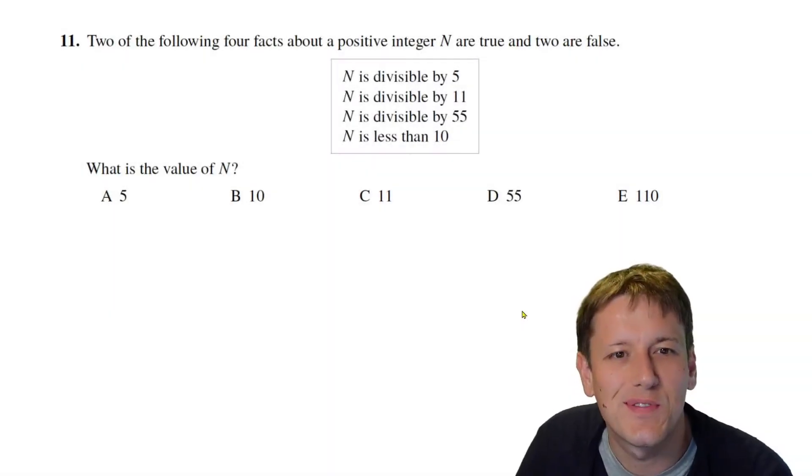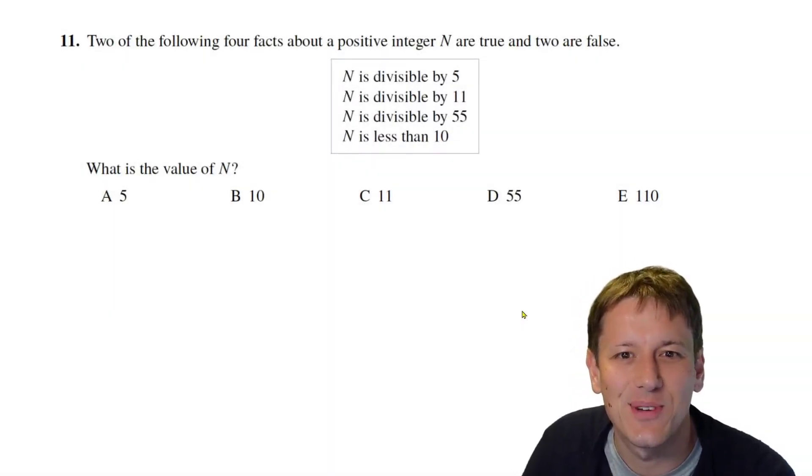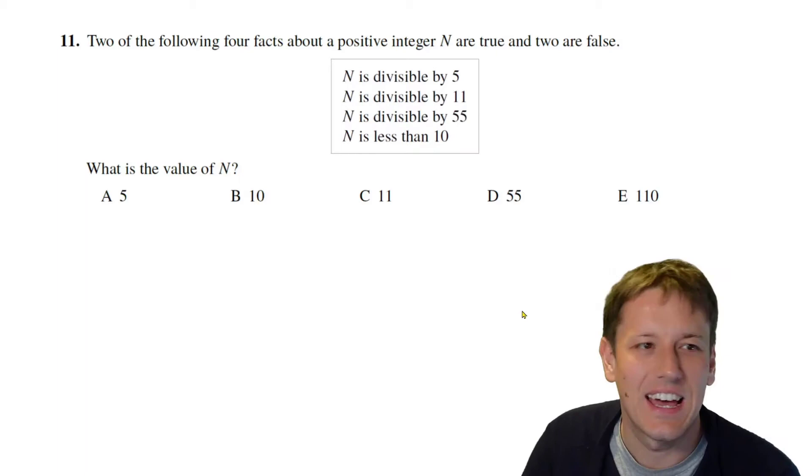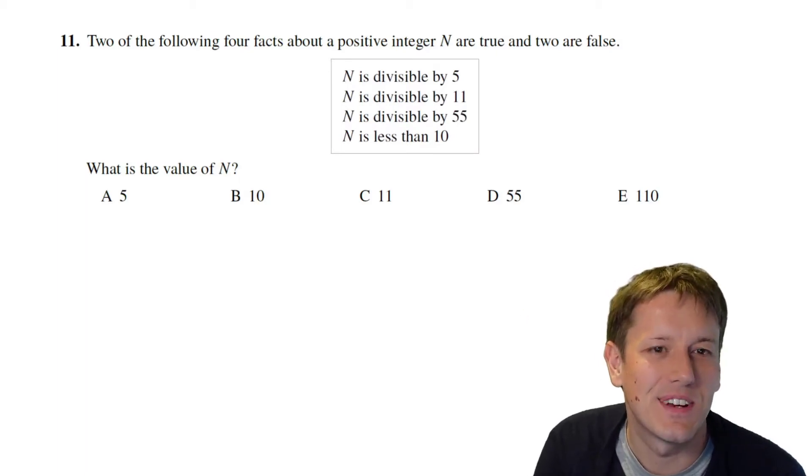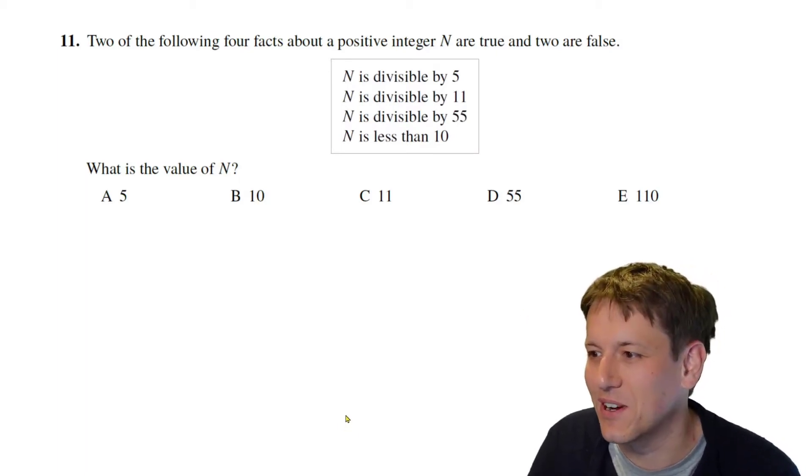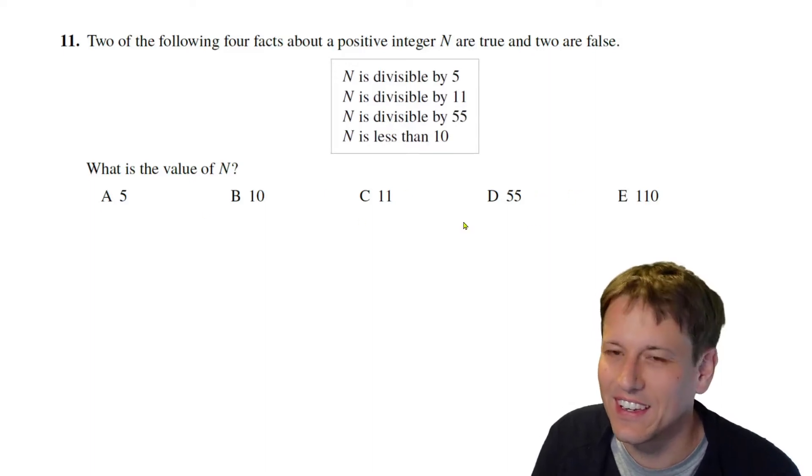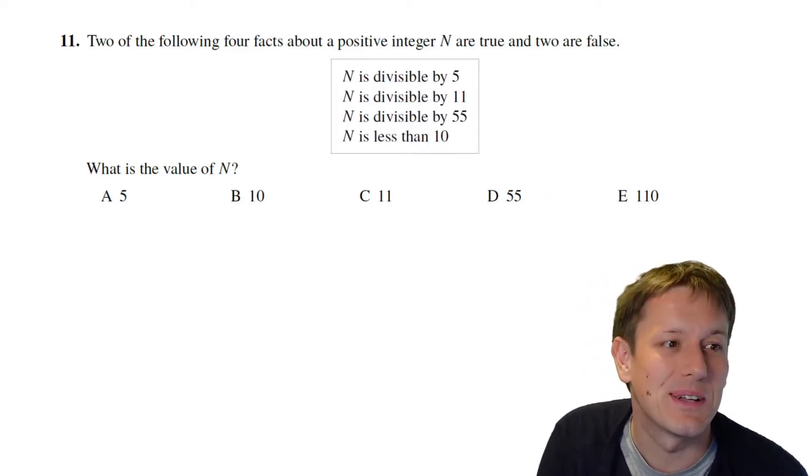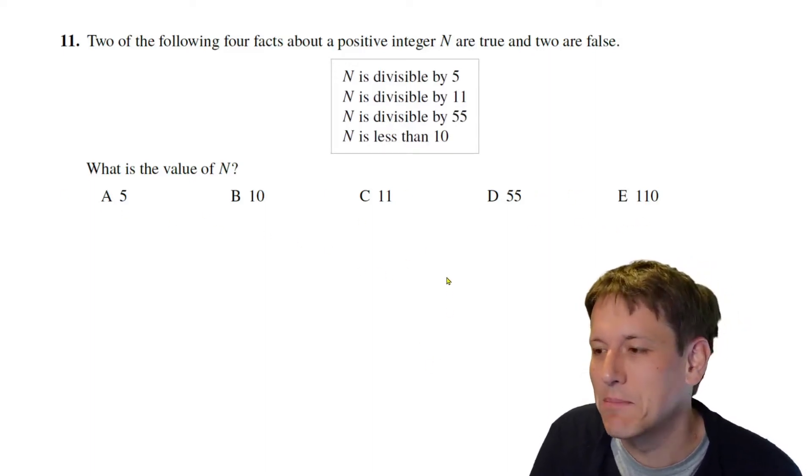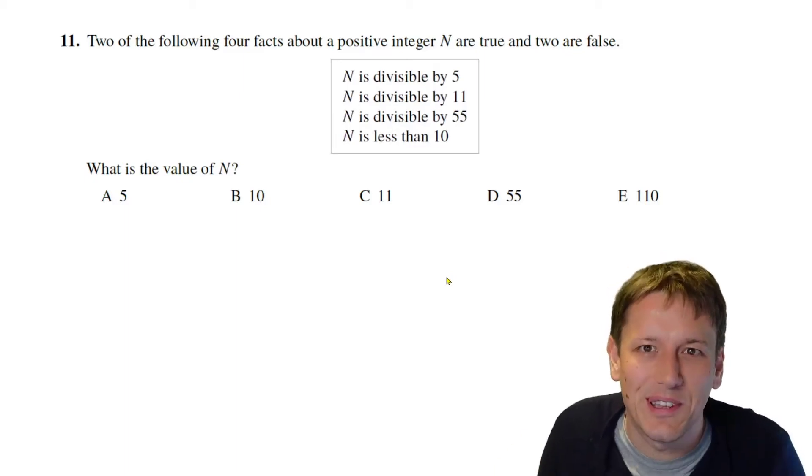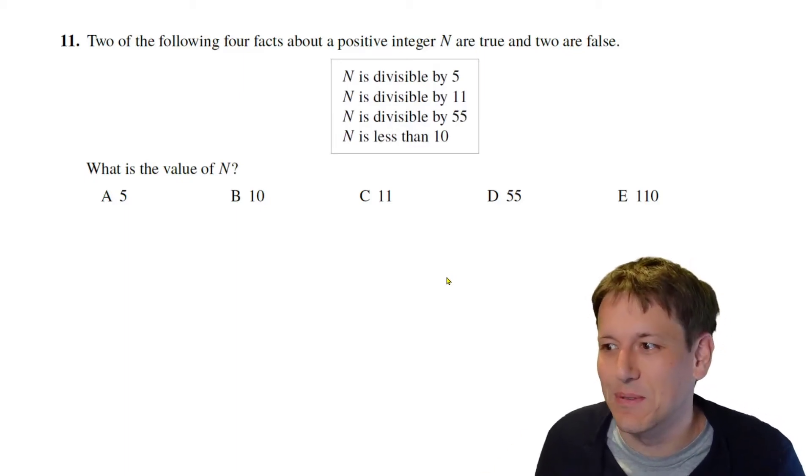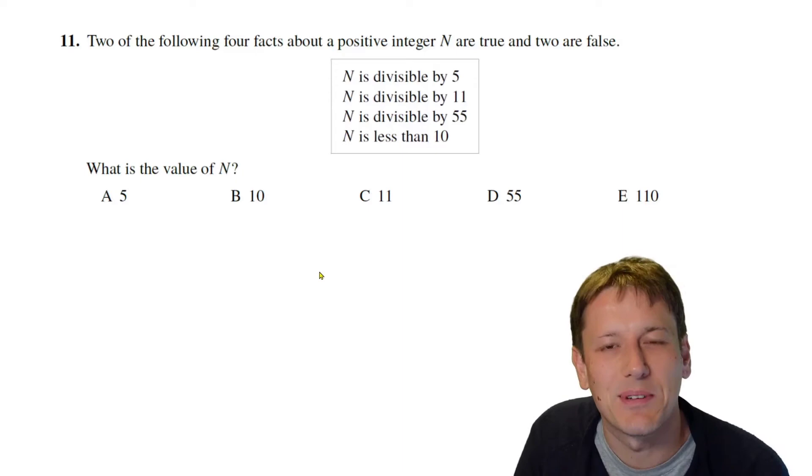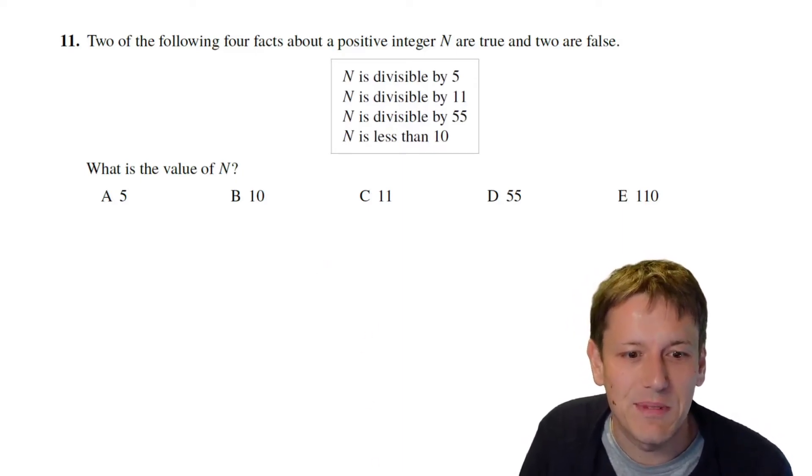Question 11 says two of the following four facts about a positive integer N are true and two are false. And it's quite funny how easy this question is if you start doing it by using the answers. So I will talk about it more mathematically as well but it's a multiple choice paper so why not look at the answers here. We know the answer has to be one of them. If you're doing this in the time constraints this is exactly the sort of thing you're meant to be doing.